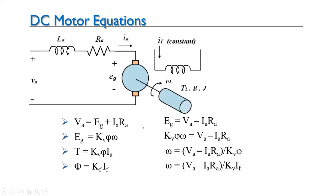The back EMF Eb is proportional to φ × speed, where φ (flux) is proportional to IF (field current). The torque developed is proportional to φ × Ia, meaning torque is proportional to Ia × IF. Rearranging these equations, speed ω = (VA − IaRa) / (K × φ), where K is the proportionality constant.